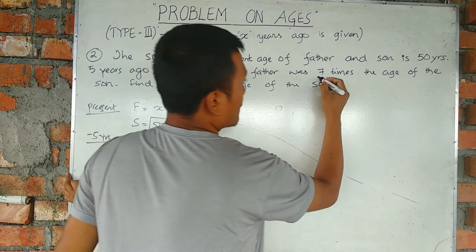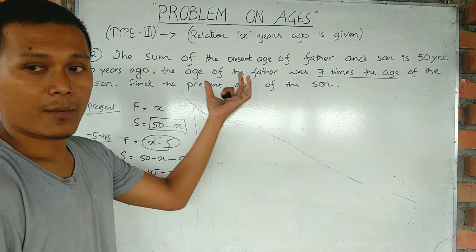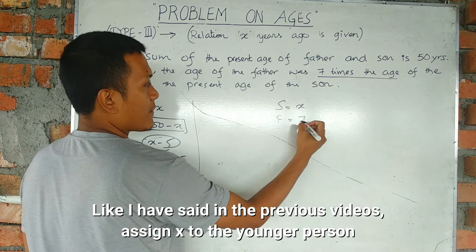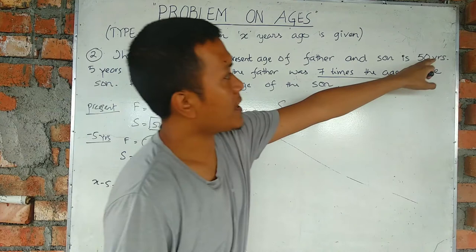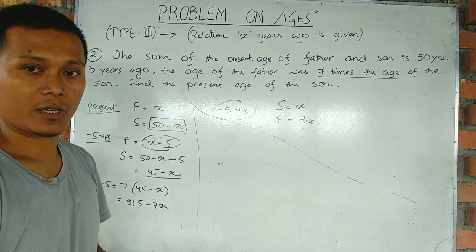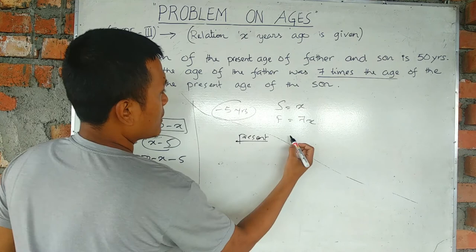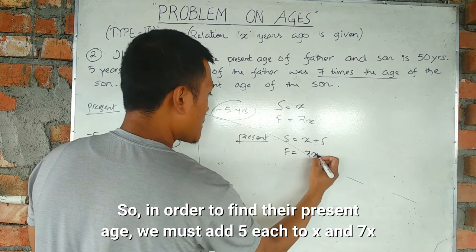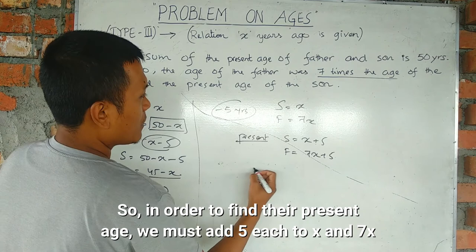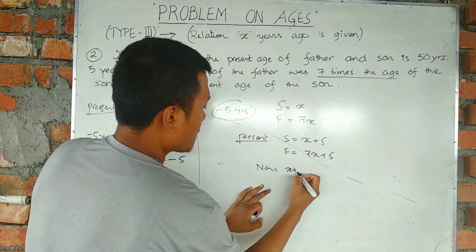Alternatively, let son be x. Father is 7x initially, seven times. Five years ago means minus five years. The present becomes x plus 5 for son and 7x plus 5 for father.